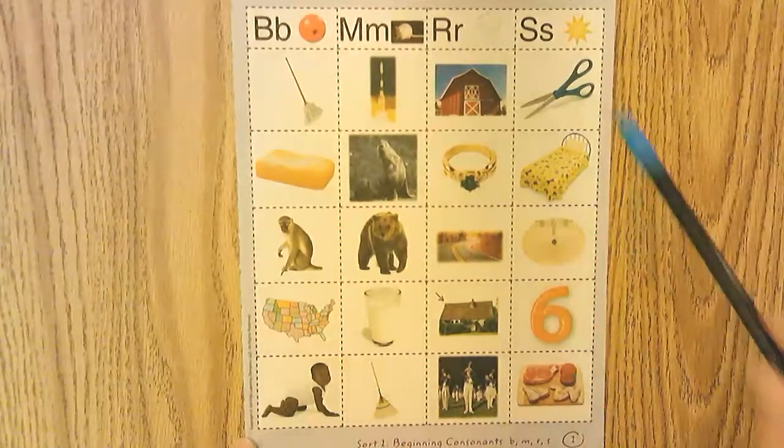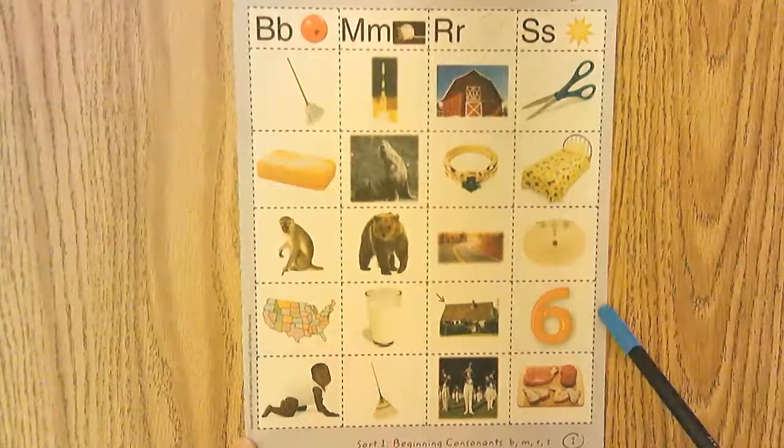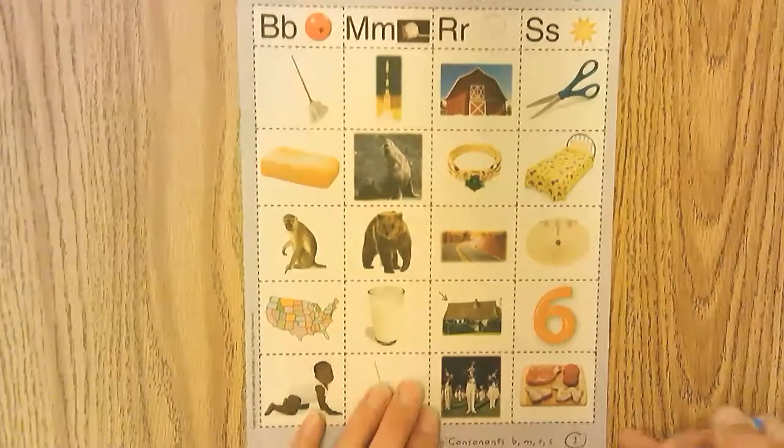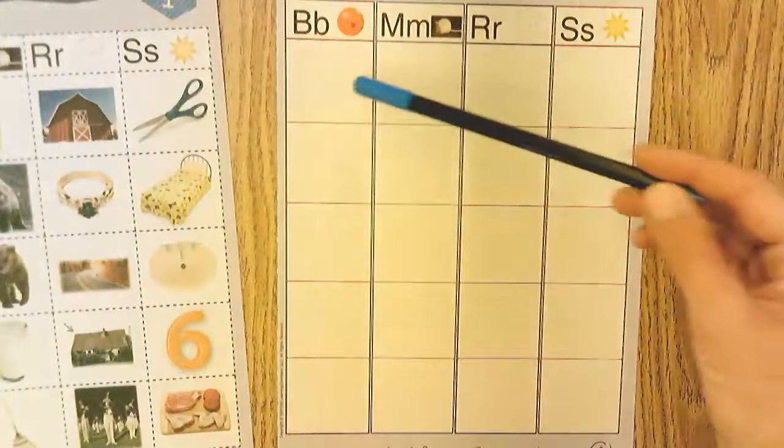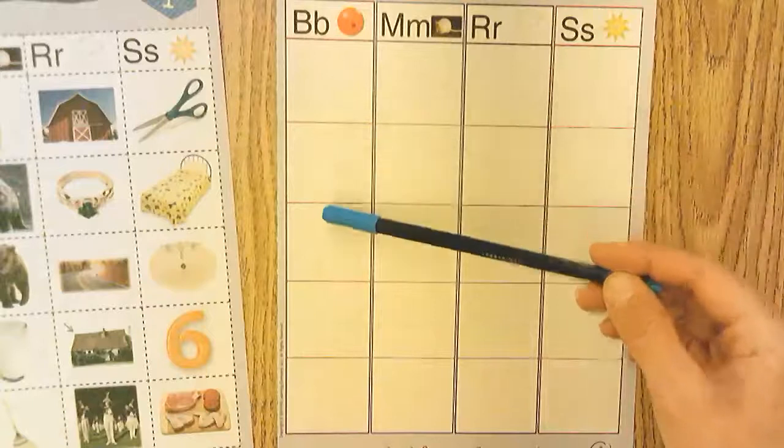So I'm going to pause the video where I cut all these words, and we're going to be sorting them on the next page. This page here. Before you glue them, you should sort them. So you cut and you put them in the correct column.